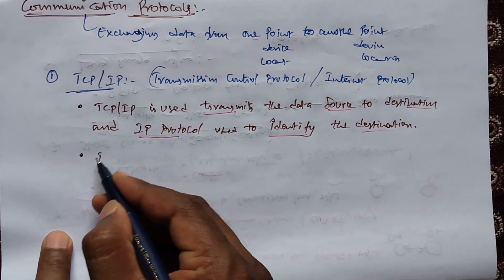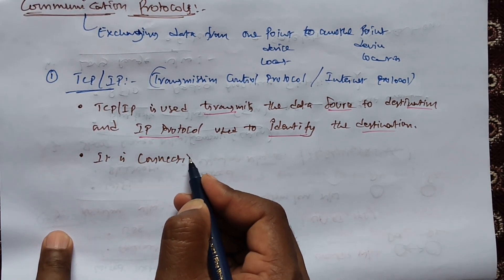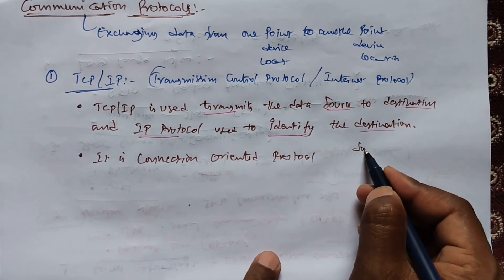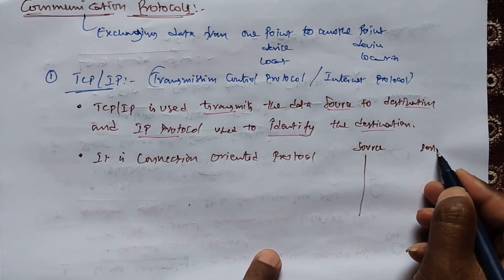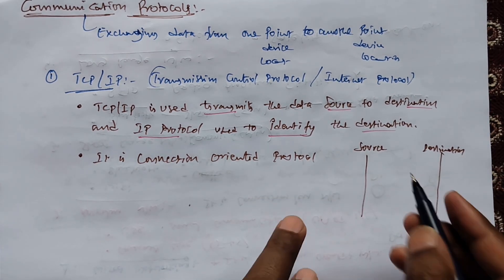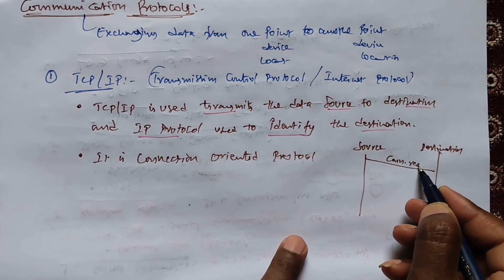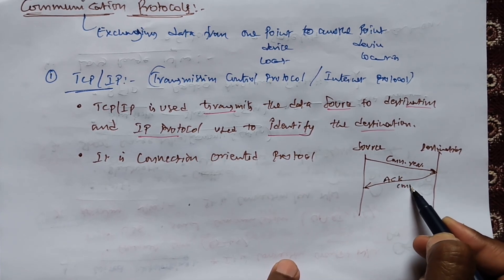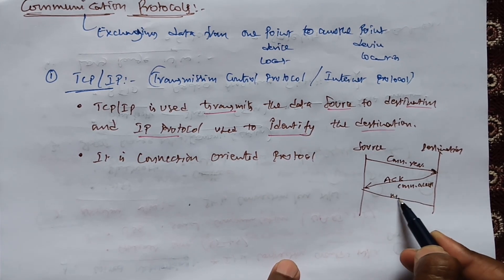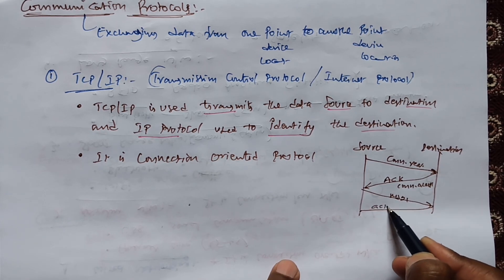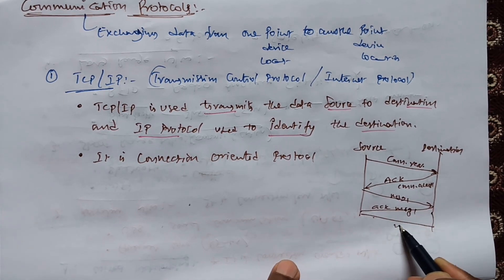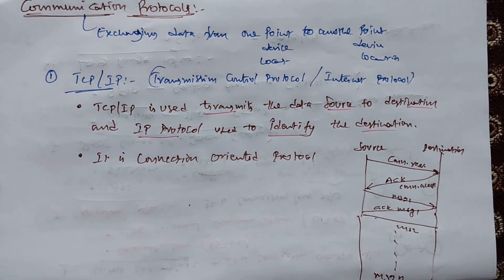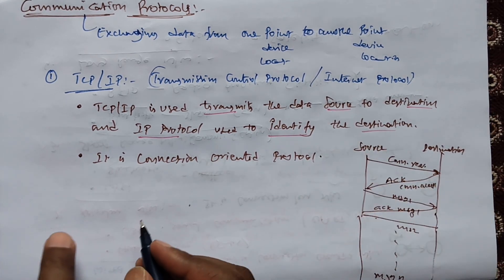TCP protocol is a connection-oriented protocol. When the source wants to send data to the destination, it won't send data directly. Initially, it will send a connection request. After that, it will receive an acknowledgement like 'connection accepted'. Then only it will send message one, receive acknowledgement for message one, then send message two, and so on up to the last message.